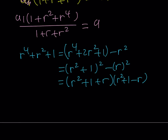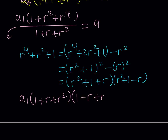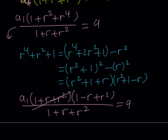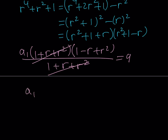Using difference of two squares, 1 + r² + r⁴ factors as (1 + r + r²)(1 − r + r²). Going back to the expression, we get a_1 times (1 + r + r²)(1 − r + r²) divided by (1 + r + r²) equals 9. The common factor cancels, leaving a_1·(1 − r + r²) = 9.